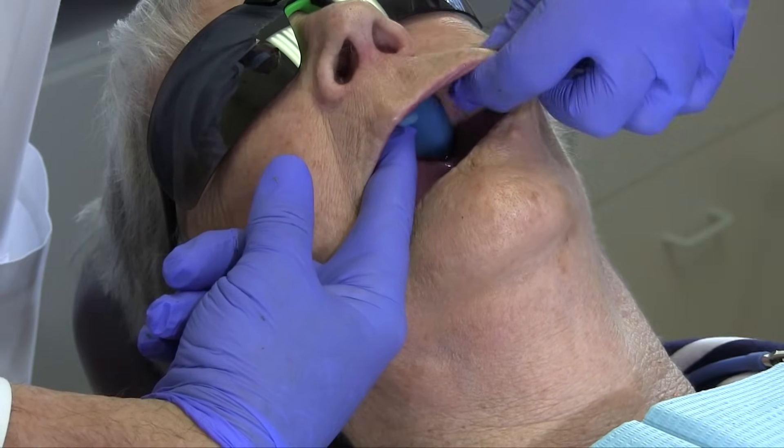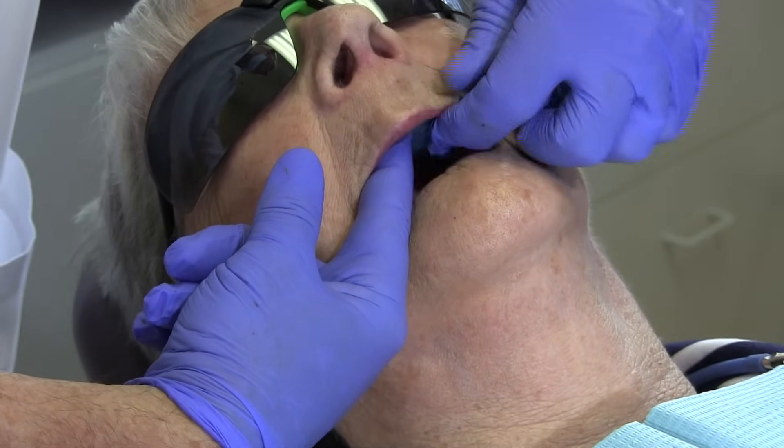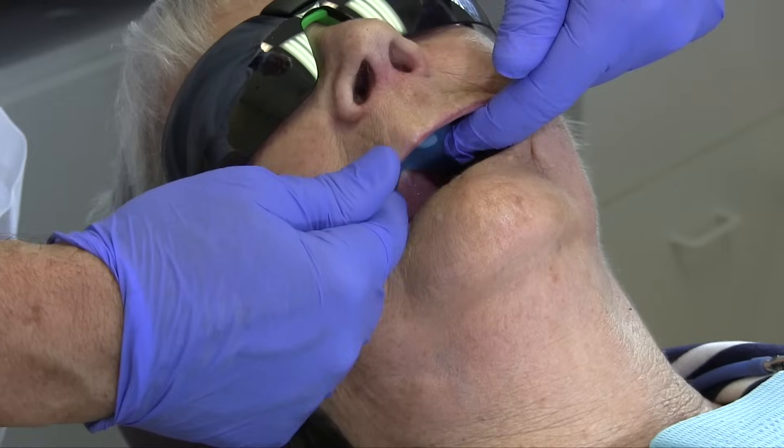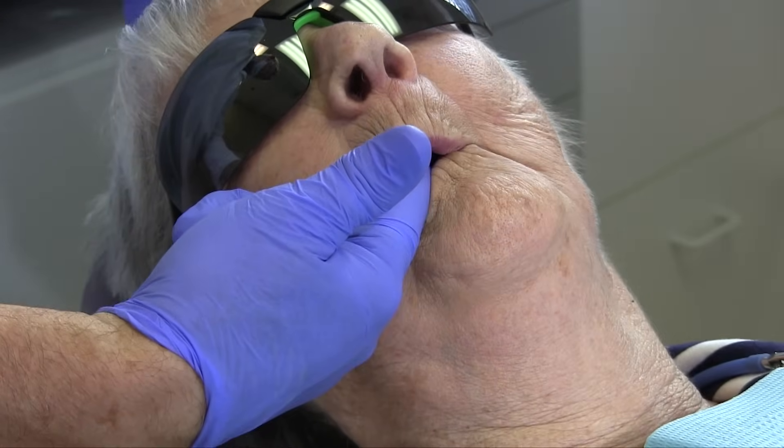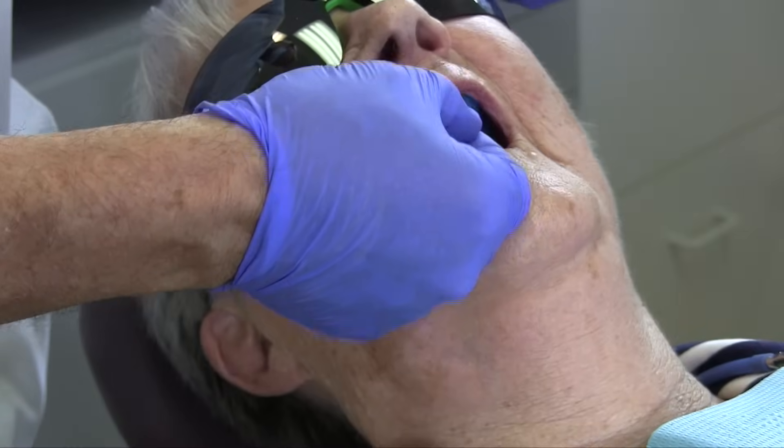Mold the softened compound by pulling on the cheeks and lips, making circular motions, and having the patient make functional movements, such as pursing or puckering their lips. Remove the tray and inspect.